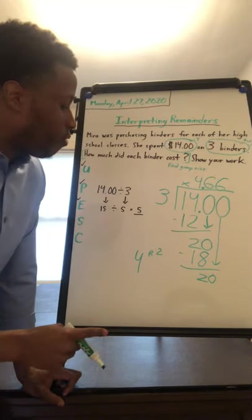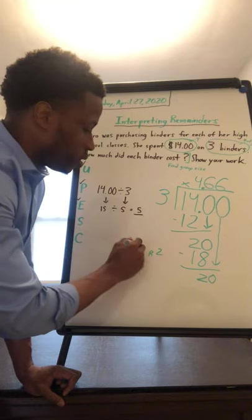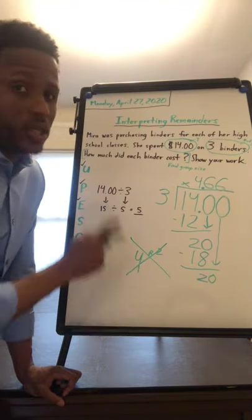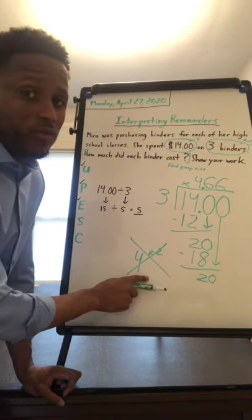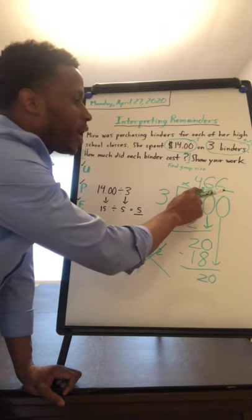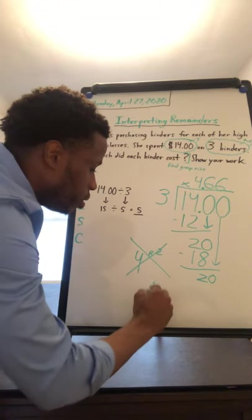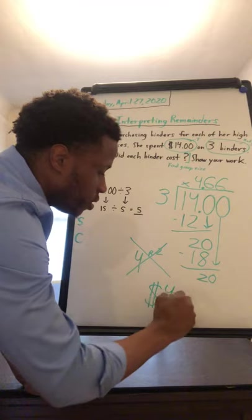So instead of writing my answer as four remainder two, which technically is correct, just doesn't answer the question in the context of this problem. Instead of writing four remainder two, I can write four and sixty six hundredths or four dollars and sixty six cents.